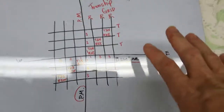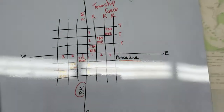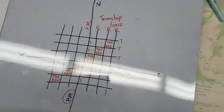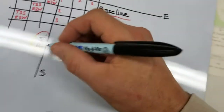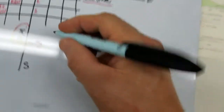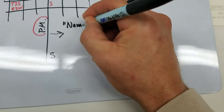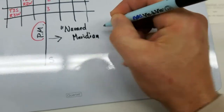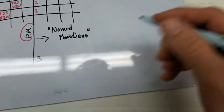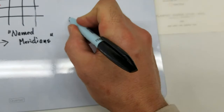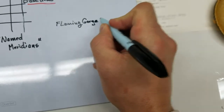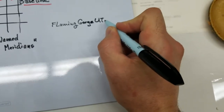One thing I need to note is that these principal meridians are called named meridians — because they have a name. The map we're going to be working off of is called Flaming Gorge, Utah.